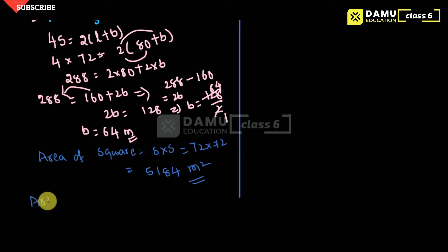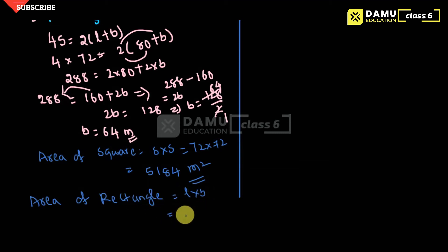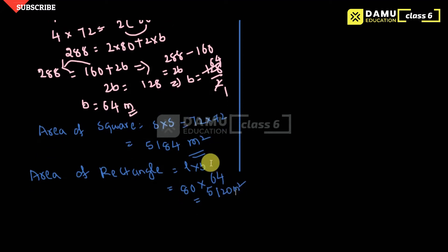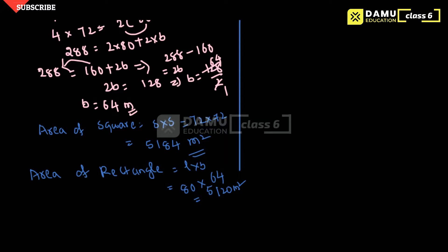Then area of rectangle equals length into breadth. So the length is 80 and breadth is 64, so 80 into 64 gives us 5120 meters square. So which one is greater? We simply take the difference — 5184 and 5120, so area of square will be greater.